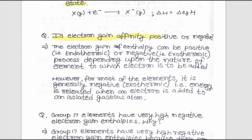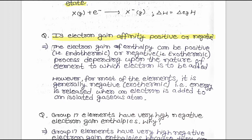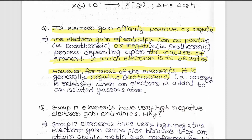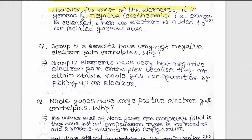The answer is that electron gain enthalpy can be positive or negative depending upon the nature of the element to which the electron is to be added. However, for most elements it is generally negative, that is, exothermic.